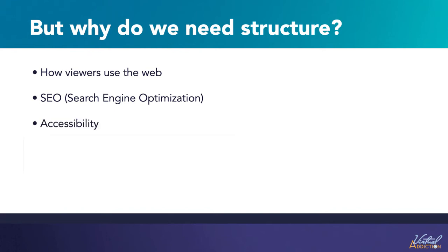Severely visually impaired people often don't read web pages — they listen to them instead. This is done with software called a screen reader. This software provides ways to get fast access to given text content. Among the various techniques used, they provide an outline of the document by reading out the headings and allowing users to find the information they need quickly. If headings are not available, they will be forced to listen to the entire document read out loud.